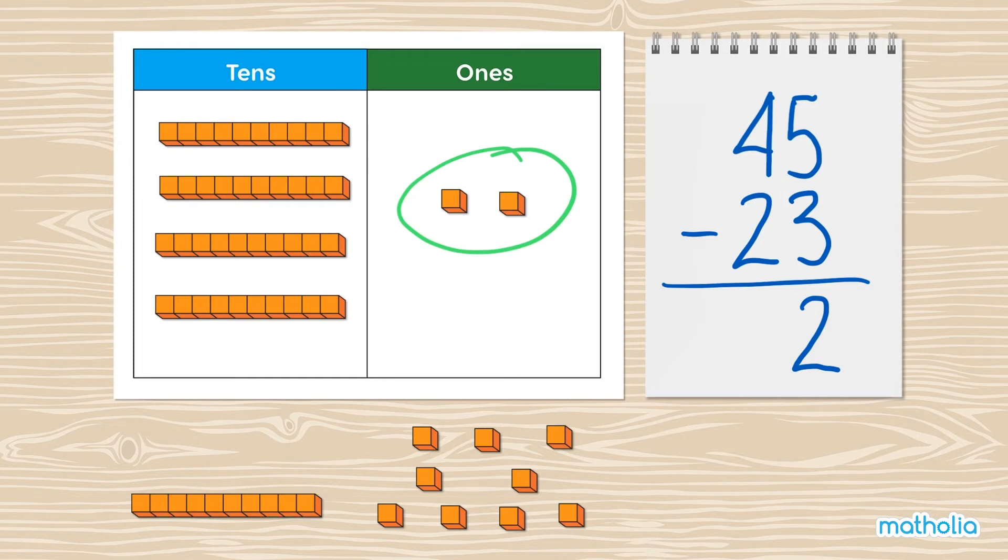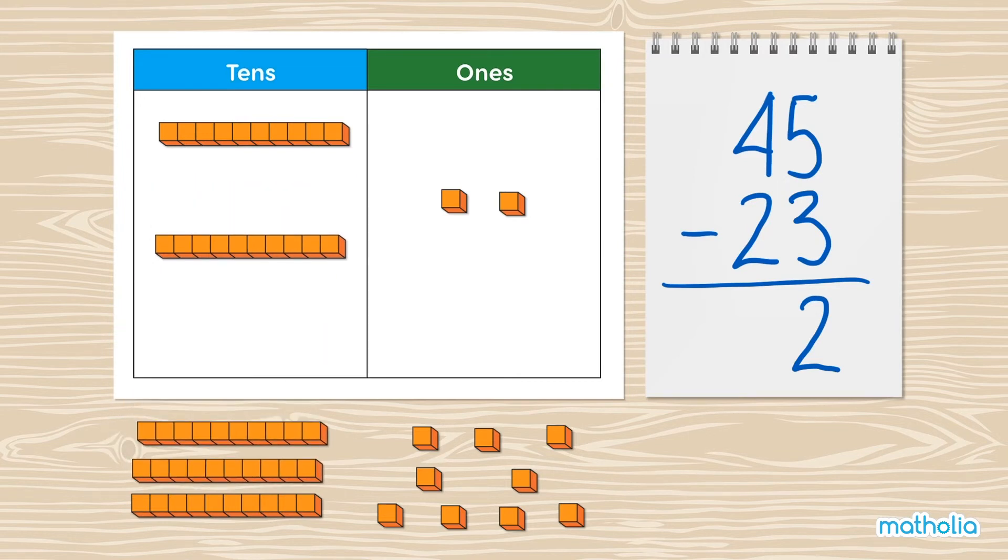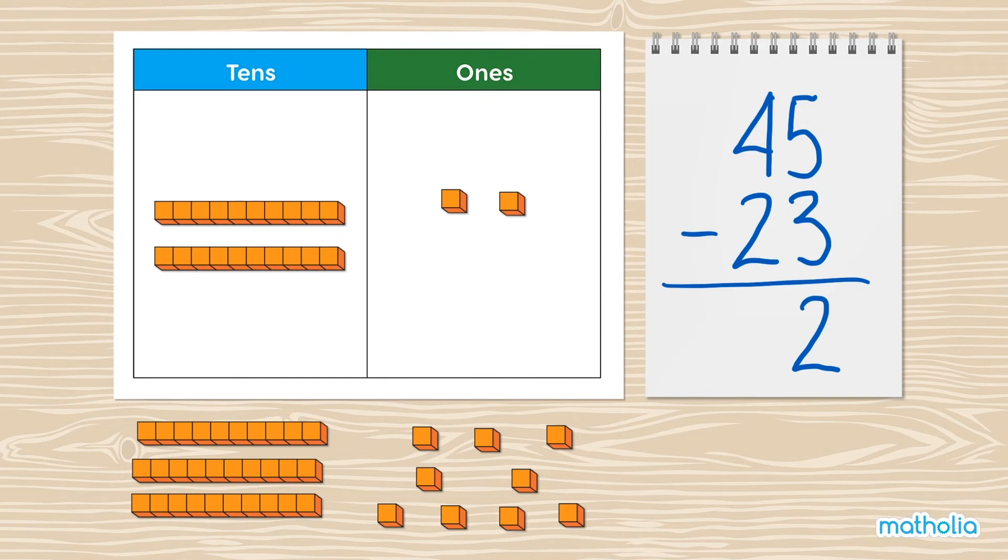Now, we move on to the tens. Let's take away 2 tens. 1, 2. There are 2 tens remaining. Write 2 in the tens column.